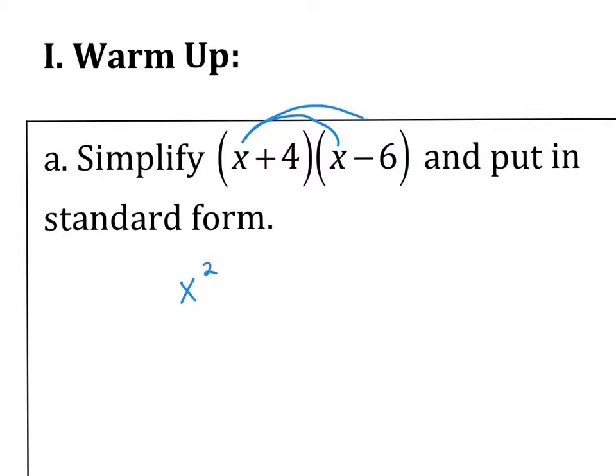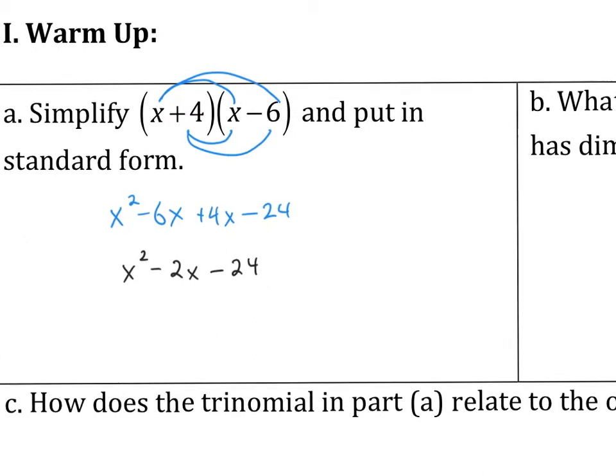Using double distribution, we get x squared, negative 6x, positive 4x, and negative 24. The two terms in the middle can combine to be negative 2x and negative 24. Notice that these two numbers here add to that, and those two numbers multiply to that. So we need to find, when we're undoing this, going backwards, two numbers that multiply to this but add to that.